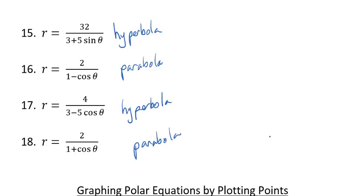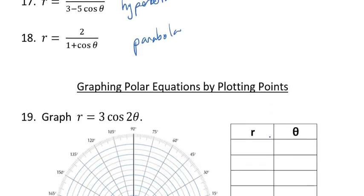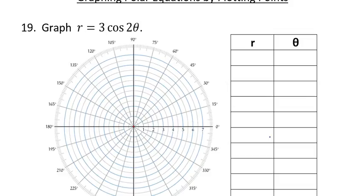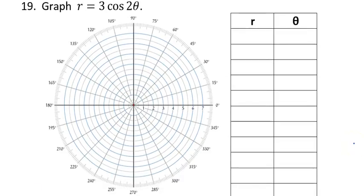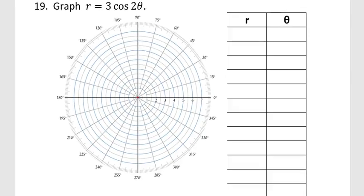I have given you a polar art project where you'll need to create plots of these graphs. One of the requirements is that you make a table of values for your graph. I'm going to show you how to do that. Since this graph uses degrees, I'm going to change the calculator back to degree mode. I'm going to plug in different values of theta — going up by 30 degrees — so 30, 60, 90, 120, 150, 180, 210, 240, 270, 300.